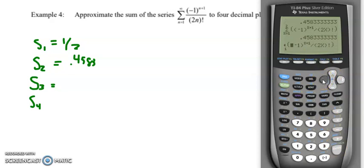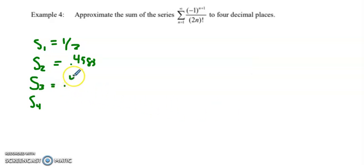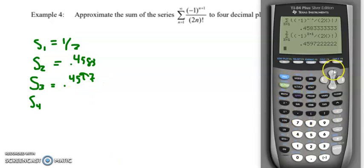So it's a little bit of a plug and chug, but I think this is a pretty easy way to do it. So the first three terms is 0.4597. Notice that I now have two decimal places repeating. The 0.45 repeats each time. So I'm getting closer.